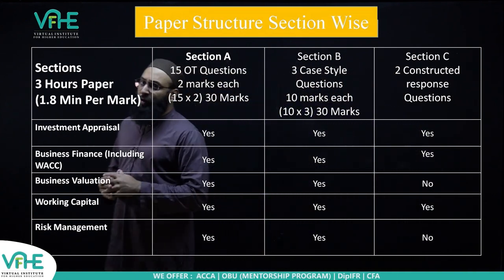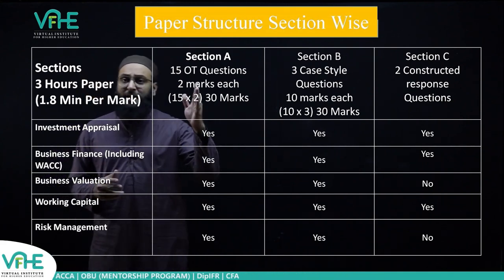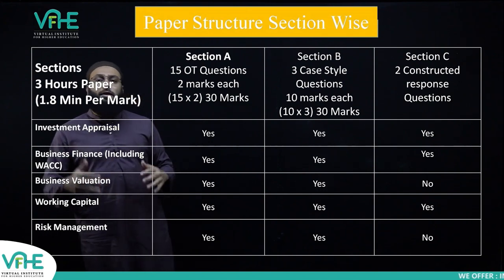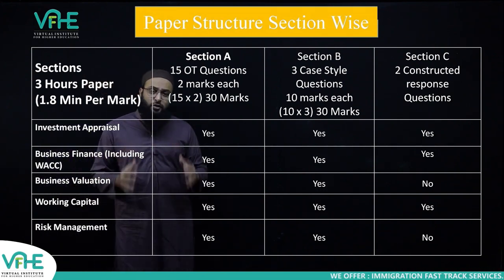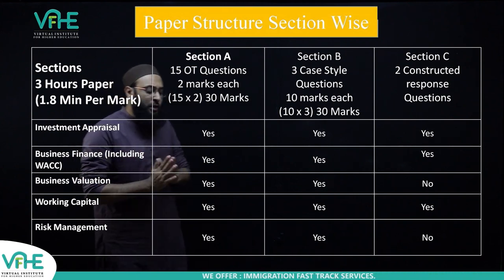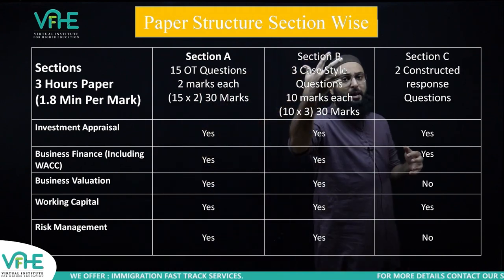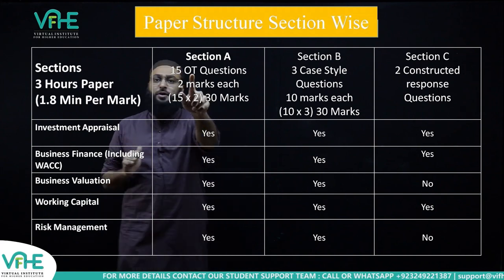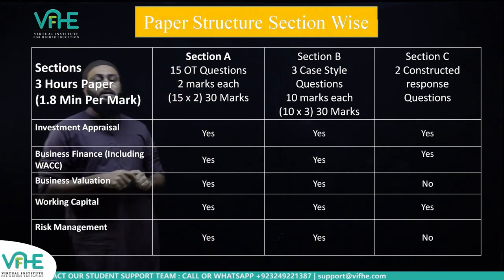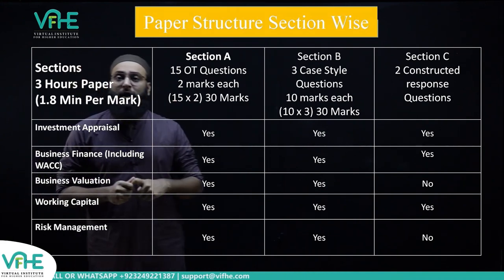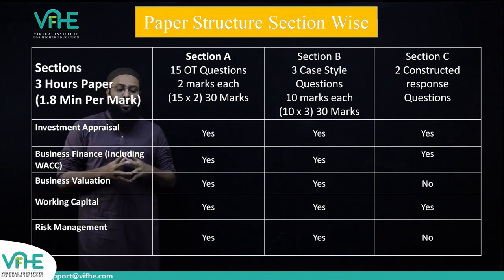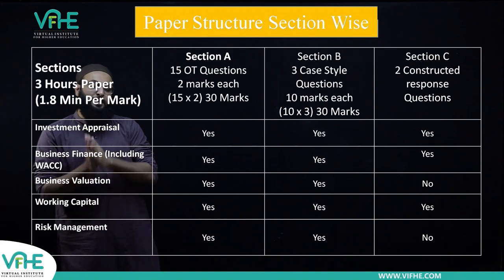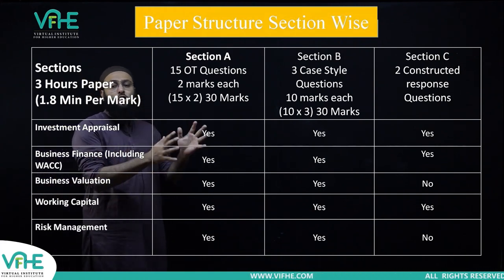The paper is divided into three sections: Section A, Section B, and Section C. Section A comprises 15 objective test questions, known as OTs. These 15 OTs can come from any area of the syllabus, so you must have a good grip over the entire syllabus.